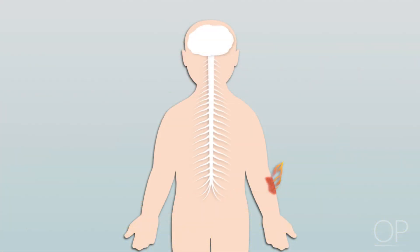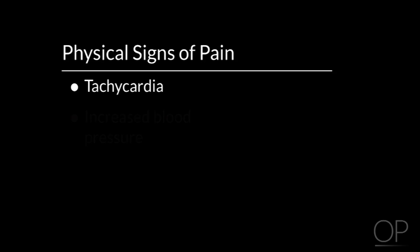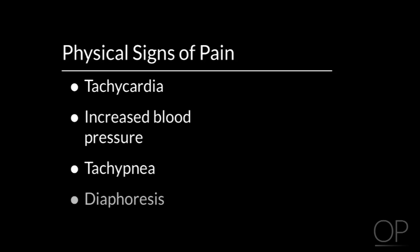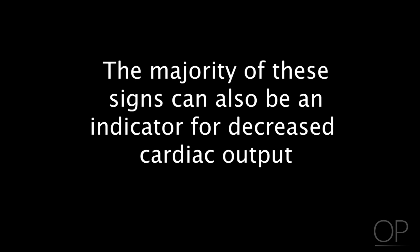Pain perception occurs when these stimuli are transmitted to the spinal cord and then to the central areas of the brain. Physiological indicators of pain can be expressed in many ways: tachycardia, increased blood pressure, tachypnea, diaphoresis, pallor, decreased peripheral circulation, and pupil dilation are all physical signs of pain. However, the majority of these signs can also be an indicator of decreased cardiac output.